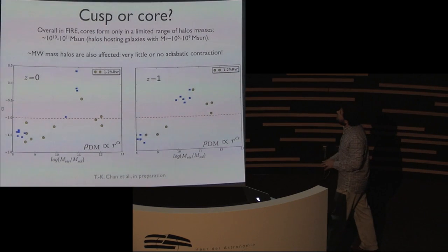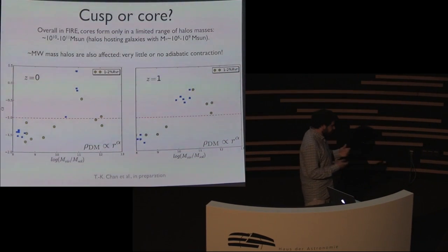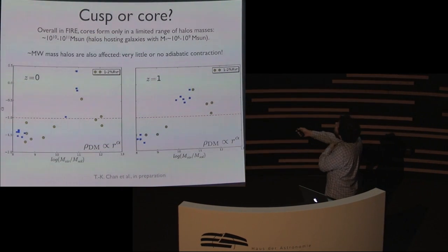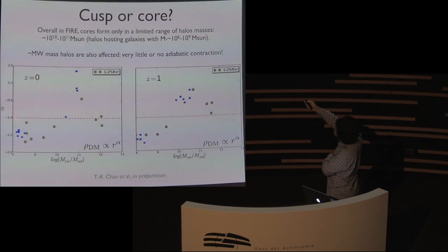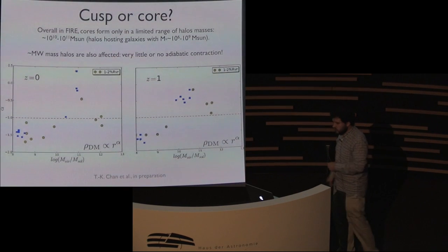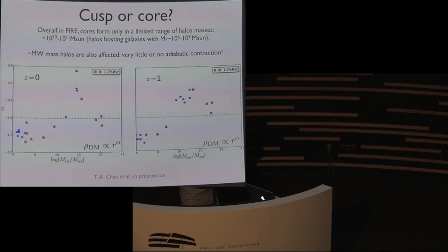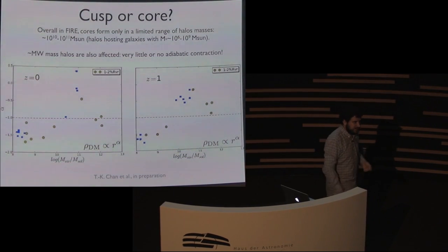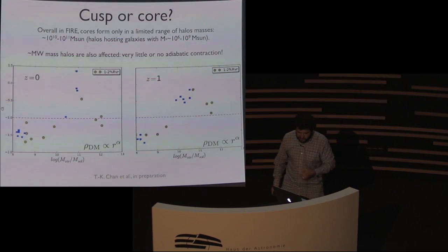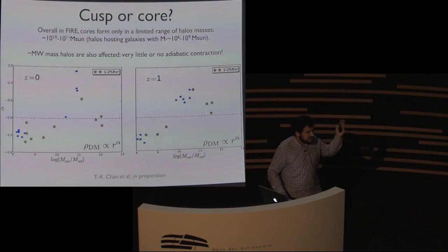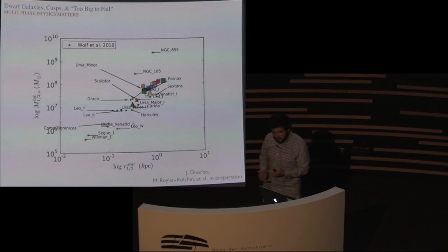TK Chan at UCSD finds that cores only form over a sweet spot in galaxy mass — roughly stellar masses between 10^6 and 10^8-10^9 solar masses. Higher mass systems have turned too many baryons into stars, pulling back on the dark matter. Lower mass systems, as pointed out by Shea Harrison-Kimmel, just don't have enough energy to sustain the repeated outbursts needed to perturb the dark matter significantly. Jose and Mike Molenkulchen have also looked at kinematics — the dynamical mass versus radius relation for local group dwarfs — relating to the too-big-to-fail problem.